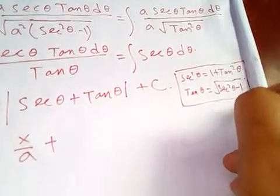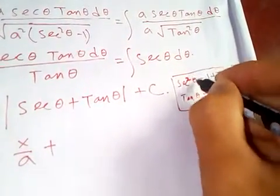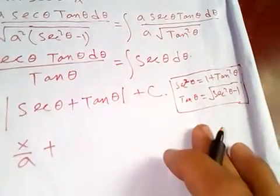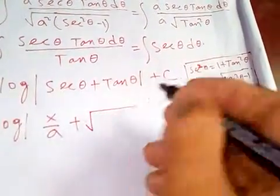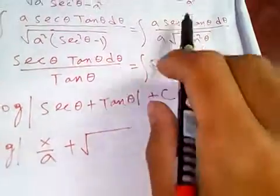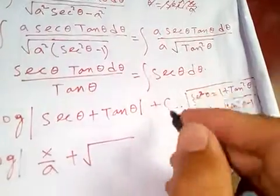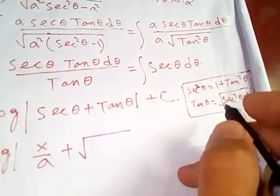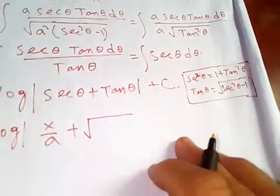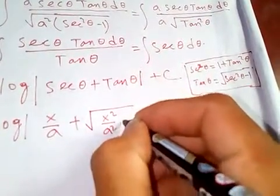We know sec squared θ equals 1 plus tan squared θ. The value of sec θ is x over a, so this will be x squared over a squared minus 1, which equals x squared minus a squared over a squared.